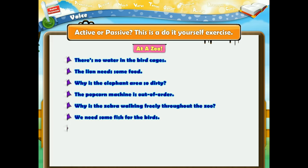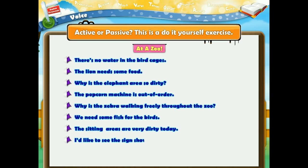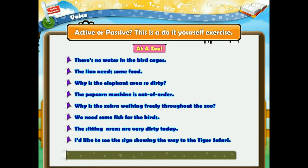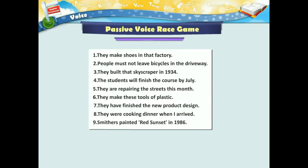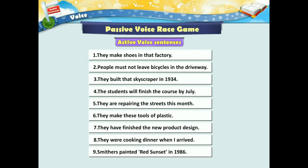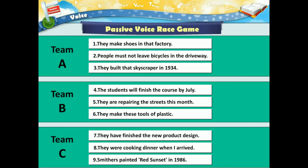Similarly, you can have sentences at an office, at a restaurant, etc. Passive voice race game: Print active voice sentences, cut into strips and distribute among teams. Each team should convert the sentences provided into the passive voice and write these on the board. Correct sentences are worth 5 points each. An incorrect sentence is worth 0 points. The team with the maximum points wins.